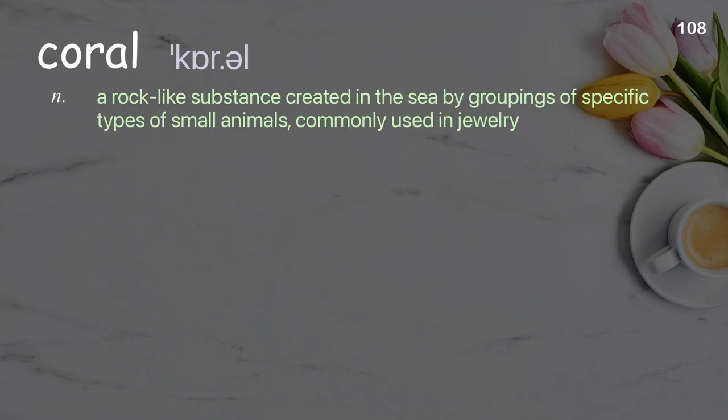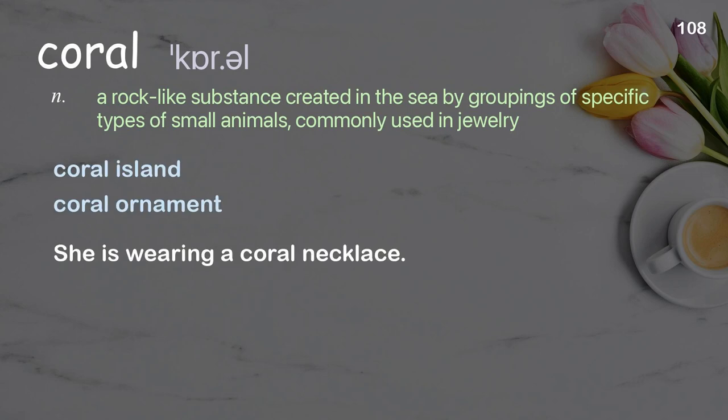Coral: A rock-like substance created in the sea by groupings of specific types of small animals; commonly used in jewelry. Examples: Coral island. Coral ornament. She is wearing a coral necklace.